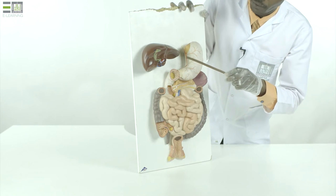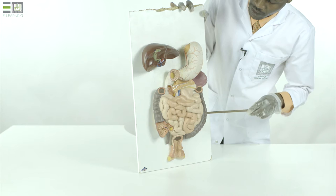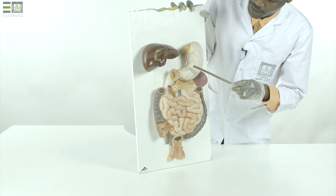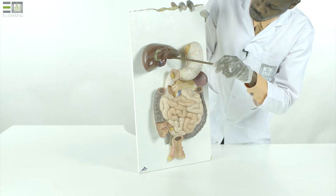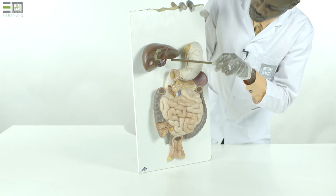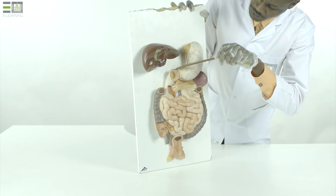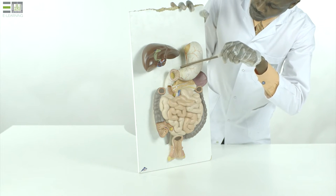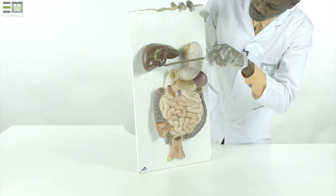The peritoneal extensions between the different organs of the abdomen form ligaments and mesentery. For example, between the visceral surface of the liver and the lesser curvature of the stomach and the beginning of the duodenum, there is lesser omentum.